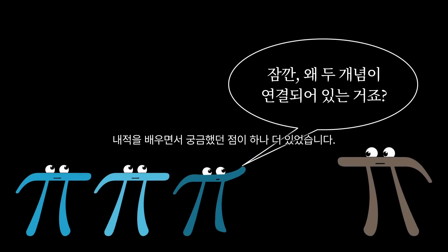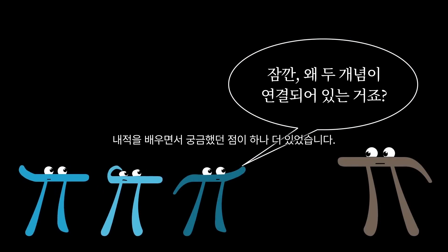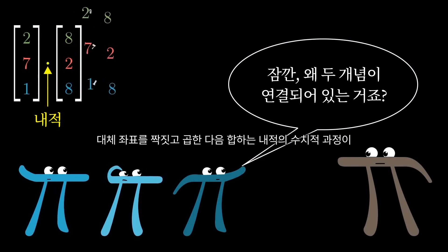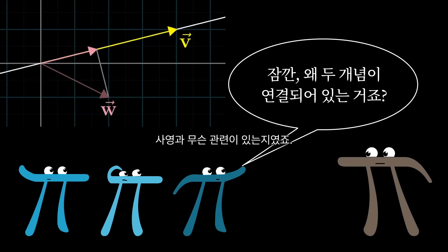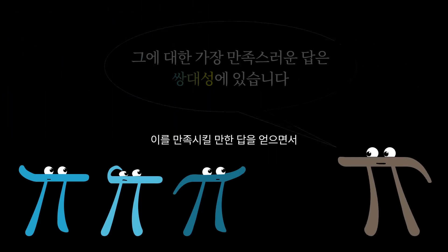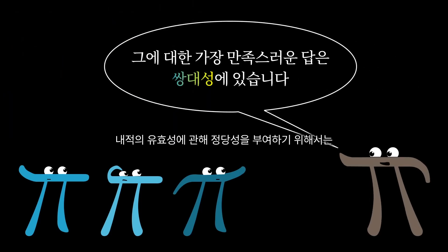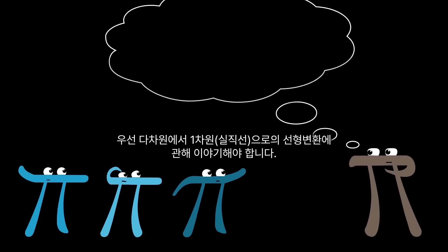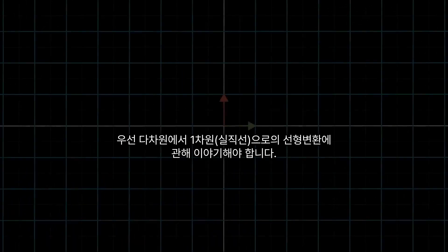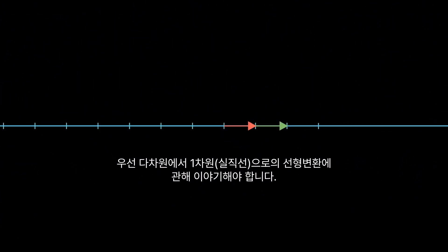There's also one other big question that confused me when I first learned this stuff: why on earth does this numerical process of matching coordinates, multiplying pairs, and adding them together have anything to do with projection? To give a satisfactory answer, and also to do full justice to the significance of the dot product, we need to unearth something a little bit deeper going on here, which often goes by the name duality. But before getting into that, I need to spend some time talking about linear transformations from multiple dimensions to one dimension, which is just the number line.